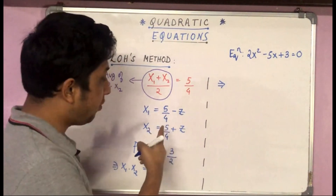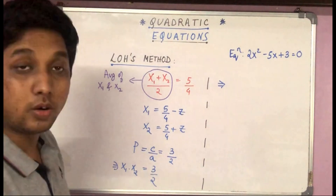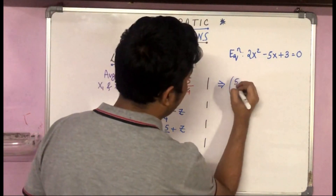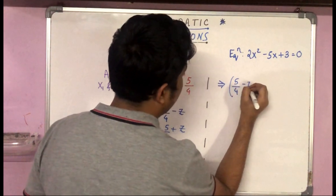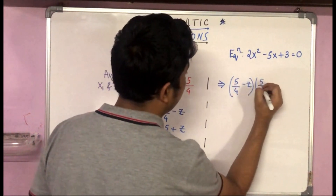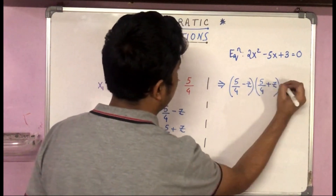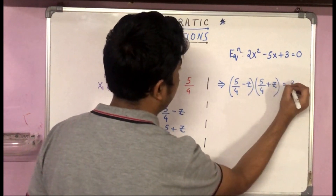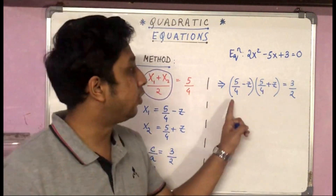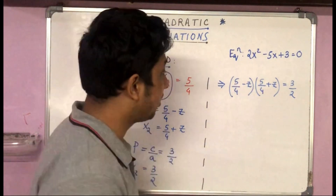Substituting our expressions: (5/4 − z) × (5/4 + z) = 3/2. We know that (a − b)(a + b) = a² − b², so this becomes (5/4)² − z² = 3/2.